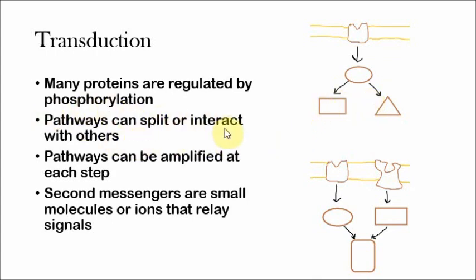Different pathways can interact with each other or split into two separate responses. As you can see in these diagrams, this essential protein will actually interact with two different proteins to play two separate functions within the cell. In this other diagram, two different signals will interact with each other to only influence one reaction, one function in the cell. Because of this, the cell can fine-tune the response like I mentioned earlier.